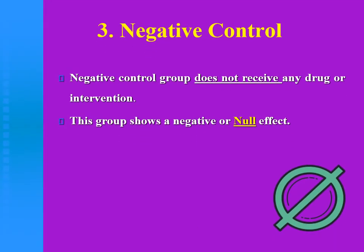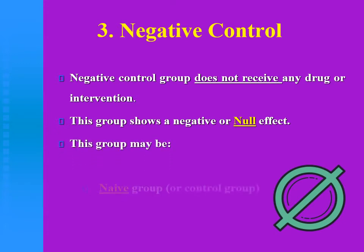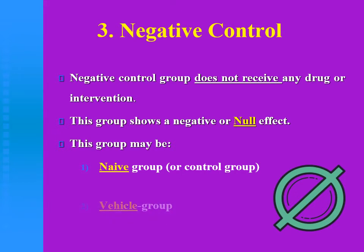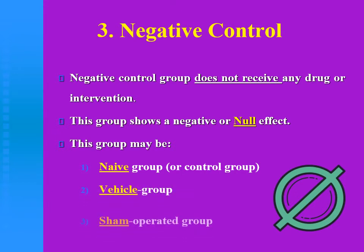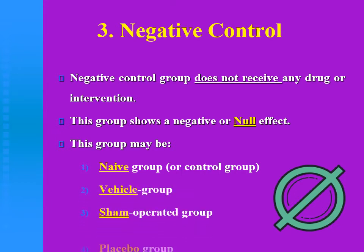The third type is the negative control group, which doesn't receive any drug or intervention and shows null effect. We have four types of negative control groups: naive, vehicle group, sham, and placebo group.